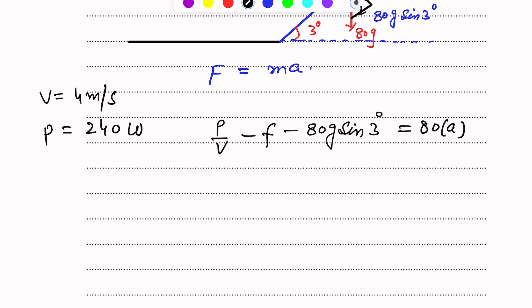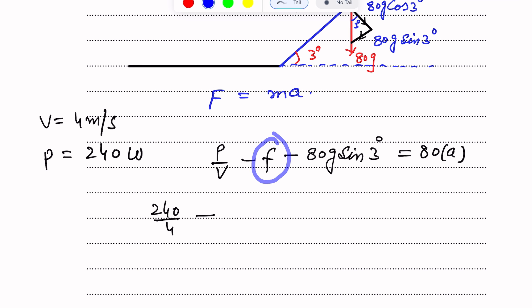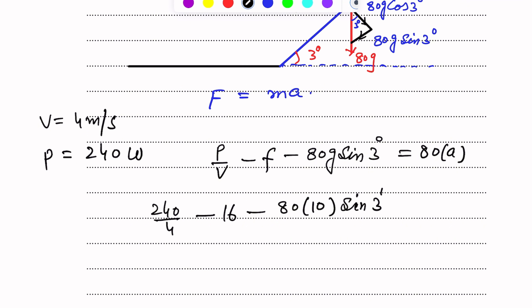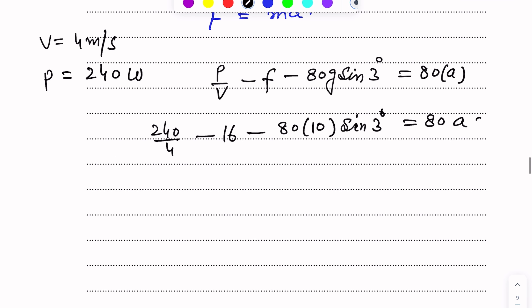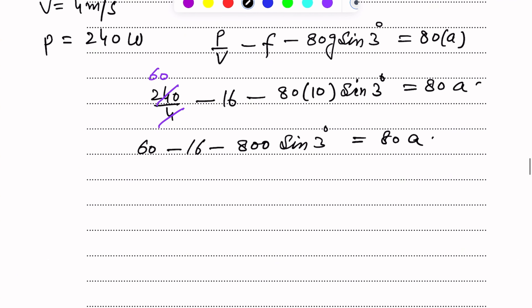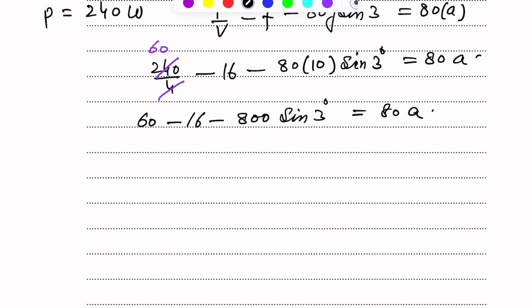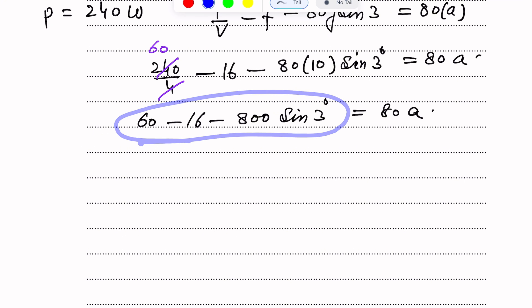Power is 240 and V is 4, so P over V equals 240 over 4 equals 60. Resistance is already found to be 16. Mass is 80, g equals 10. So: 60 minus 16 minus 80 times 10 times sin 3 degrees equals 80a. This gives 60 minus 16 minus 800 sin 3 degrees equals 80a.